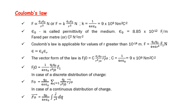Coulomb's law is the base. Force F is equal to k times q1 times q2 divided by r squared, where F is in newtons. The constant k is equal to 1 divided by 4 pi epsilon 0, with value 9 × 10⁹ N·m²·C⁻². Epsilon 0 is the permittivity of the medium (free space), with value 8.85 × 10⁻¹² F/m, or equivalently C²·N⁻¹·m⁻².